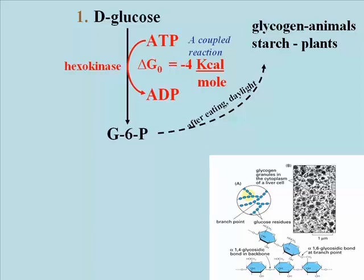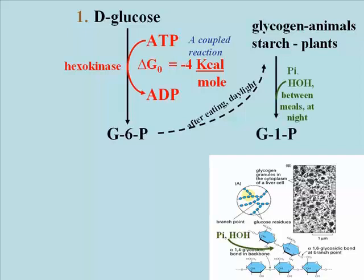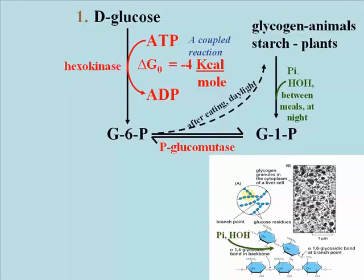Stored glycogen is visible in the electron microscope as electron-dense granules, such as those seen in the micrograph in the lower right. Between meals, or at night in the dark in plants, glycogen or starch is hydrolyzed to release glucose 1-phosphate, which is in turn converted back to glucose 6-phosphate by the enzyme phosphoglucomutase. Mutases are enzymes that catalyze the transfer of functional groups, often phosphates, from one carbon to another in the same molecule.